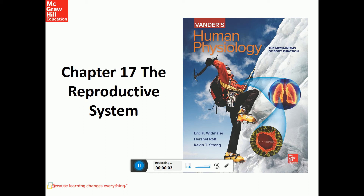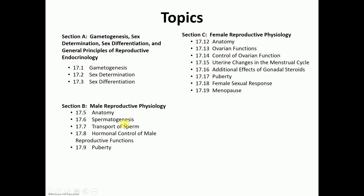This week we'll discuss chapter 17, the reproductive system. The topics we'll be covering include gametogenesis, which is the production of gametes, then sex determination and differentiation with some of the disorders. The second video will cover male reproductive physiology, and the third video will cover female reproductive physiology. Let's go ahead and start the first one.